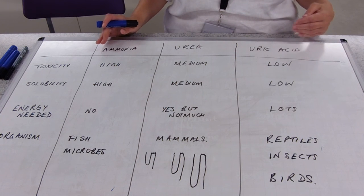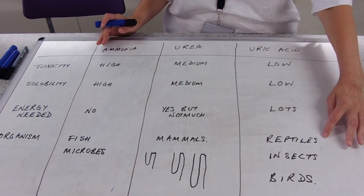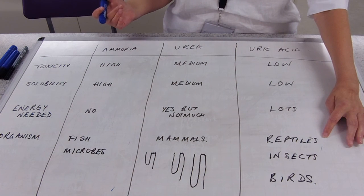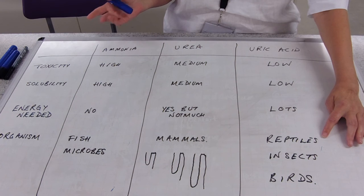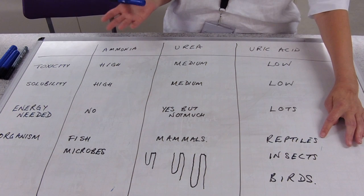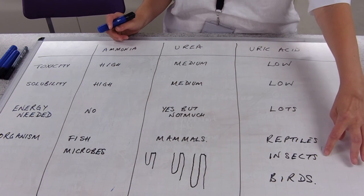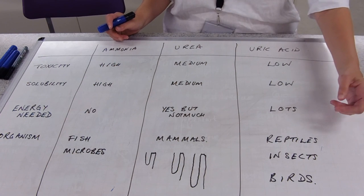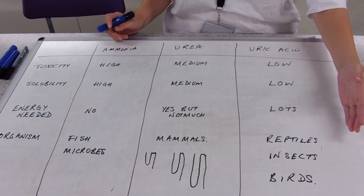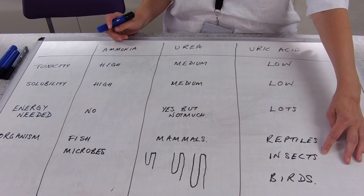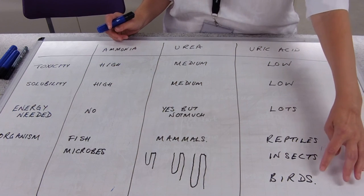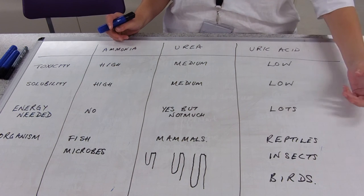So, organisms that do uric acid. Reptiles, obviously. Egg laying. Quite often, they're adapted to live. I know there are sea turtles. There's always the exception. But, they're adapted for terrestrial dry environments. Insects, needing to do two things. Lay eggs. And, the vast majority of them fly. And, birds, of course. Again, laying eggs.